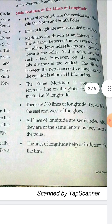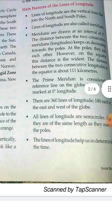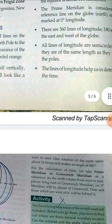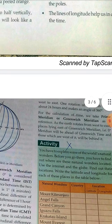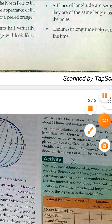Lines of longitude help us determine time, while latitudes help us know the temperature — which is why we studied the three different temperature zones. The prime meridian is considered the reference line on the globe, marked at 0 degrees longitude. There are 360 lines of longitude in total, 180 to the east and 180 to the west of the globe.